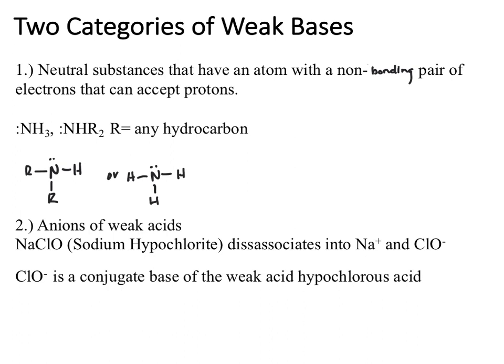These lone pairs impart the basic character or the ability to take on protons. If I take this ammonia and interact with some generic acid, the electrons from my base will pick up the proton. We'll produce the ammonium ion as our conjugate acid and this species as our conjugate base.